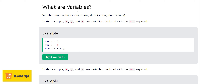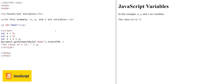Variables are containers for storing data or values. Here we have an example with three variables x, y, and z declared with the var keyword. var x is equal to 5 — we have declared a variable and assigned the value 5 to it. Similarly var y is assigned 6, then we do x plus y and the result is assigned to z.